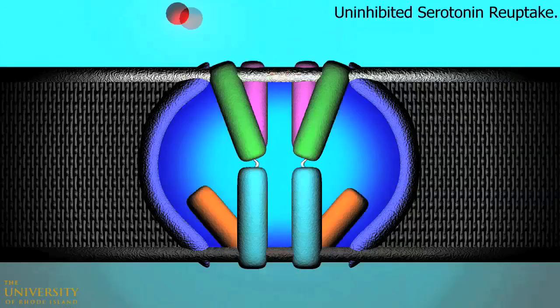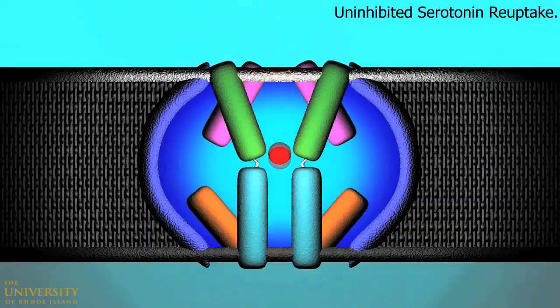During uninhibited serotonin reuptake, serotonin moves through the transport protein's gated rocker switches smoothly.